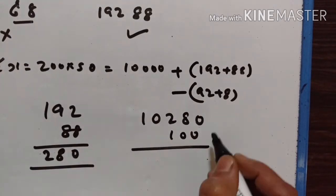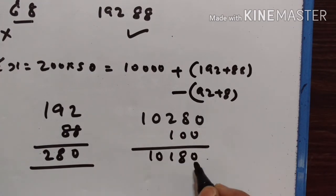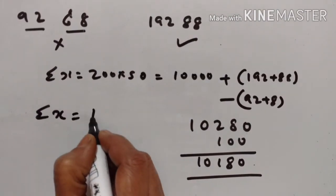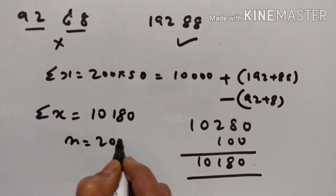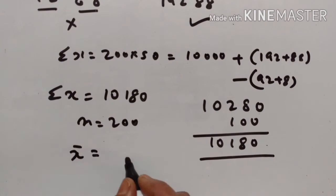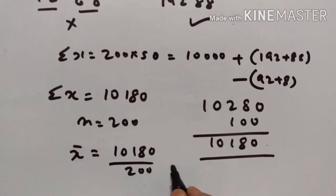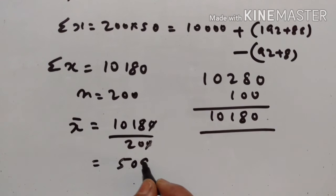192 plus 88 is 280. So 10,000 plus 280 is 10,280. Now subtract the wrong values: 92 plus 8 is 100. So the new sum is 10,280 minus 100, that is 10,180. n is equal to 200, so the correct mean is 10,180 divided by 200, which is 50.9.